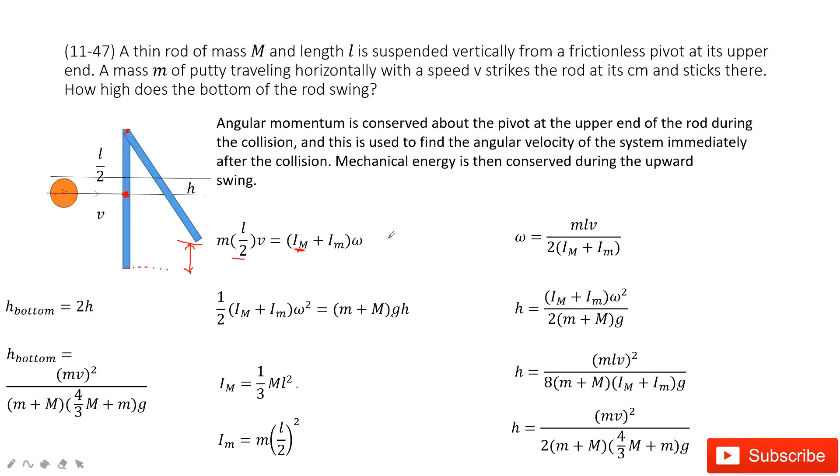We can get omega equal to this one. From this equation, we get h equal to this. We input omega and the moment of inertia inside. We input the known quantities and get h equal to (mlv)² over 8(m + M/3)(M + m)g. Remember, this h is the distance moved for the center of mass.